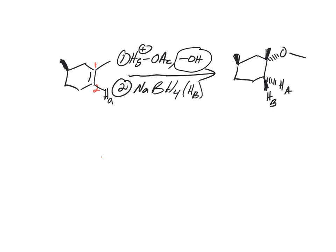You'll notice the solvent we added is trans to the H we added — which makes sense, consistent with trans addition stereochemistry. The solvent ends up on the more substituted carbon. We also make the other product — the diastereomer — where HA was originally on carbon 2 and ends up on the same side as the solvent added, while HB is the one we're adding, so it's trans.